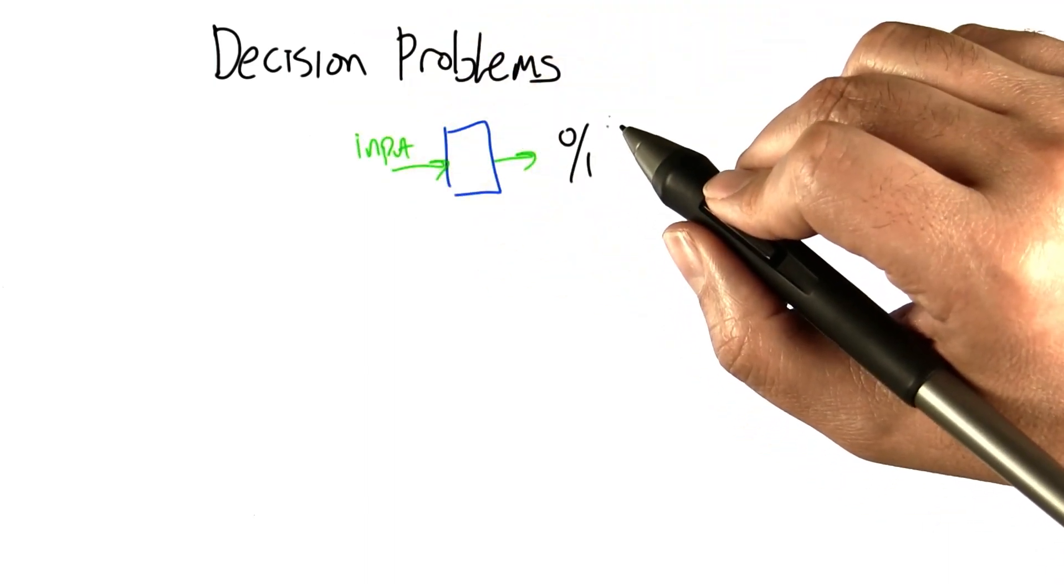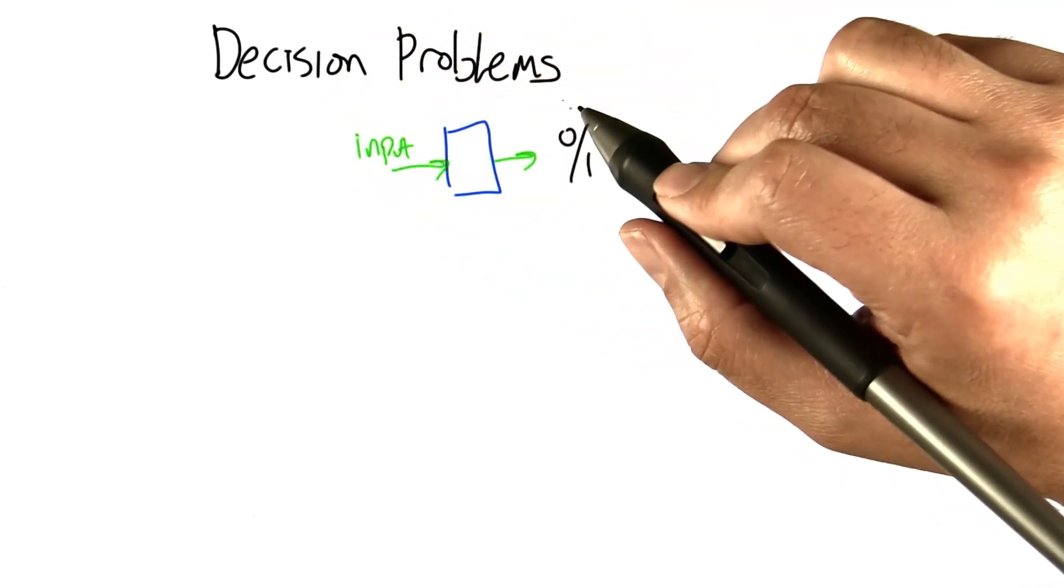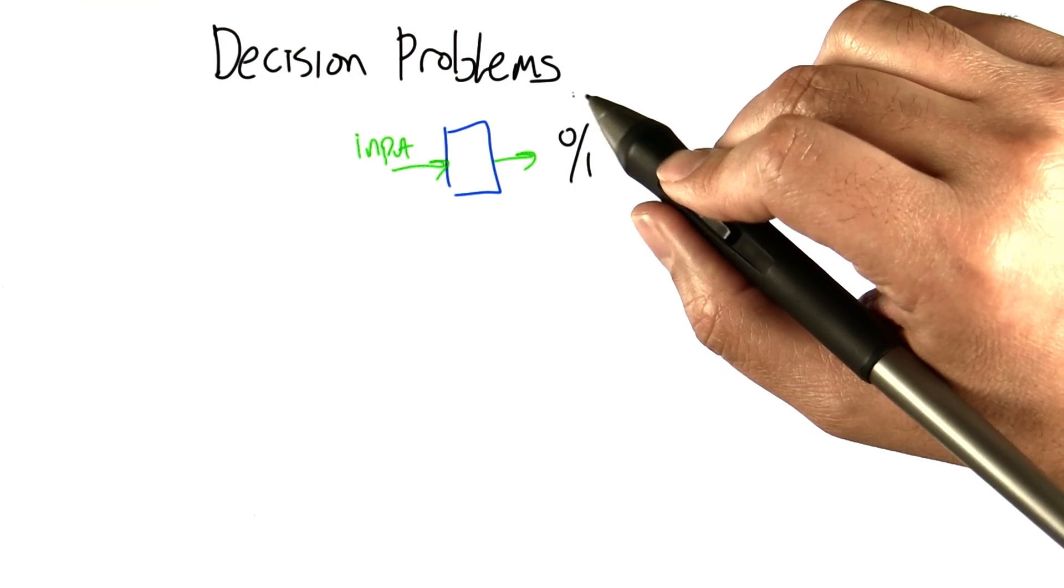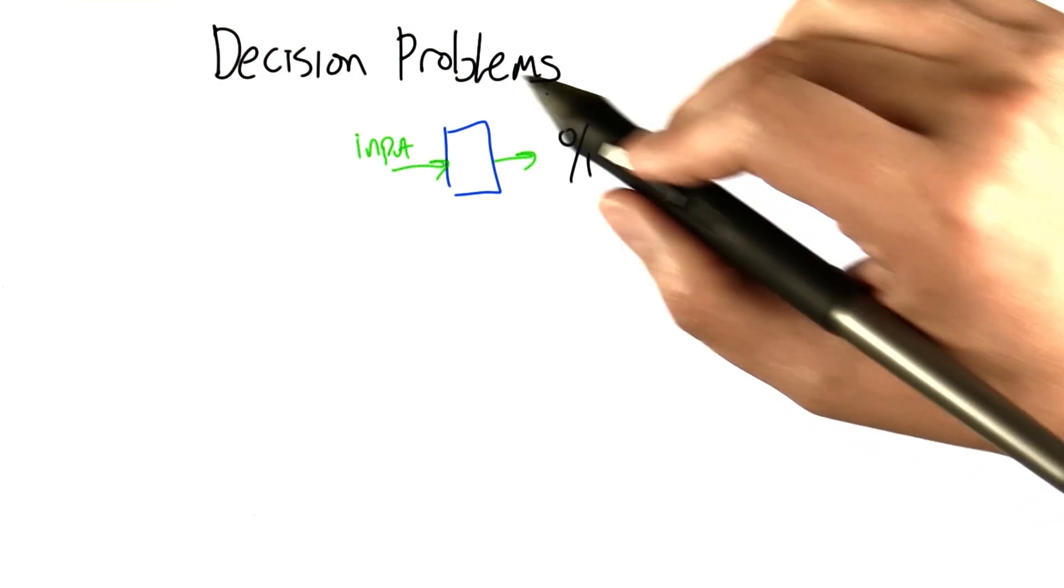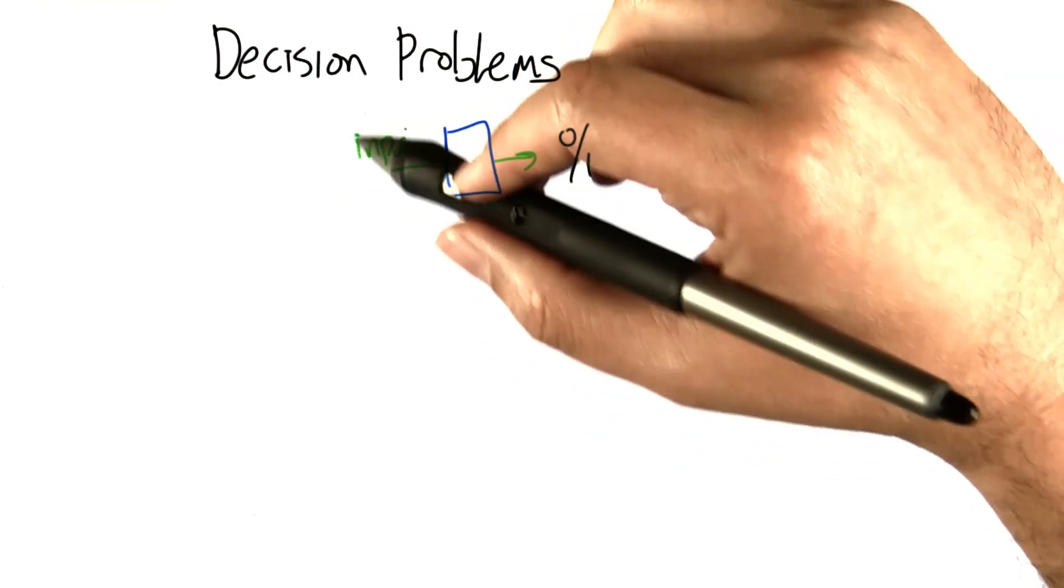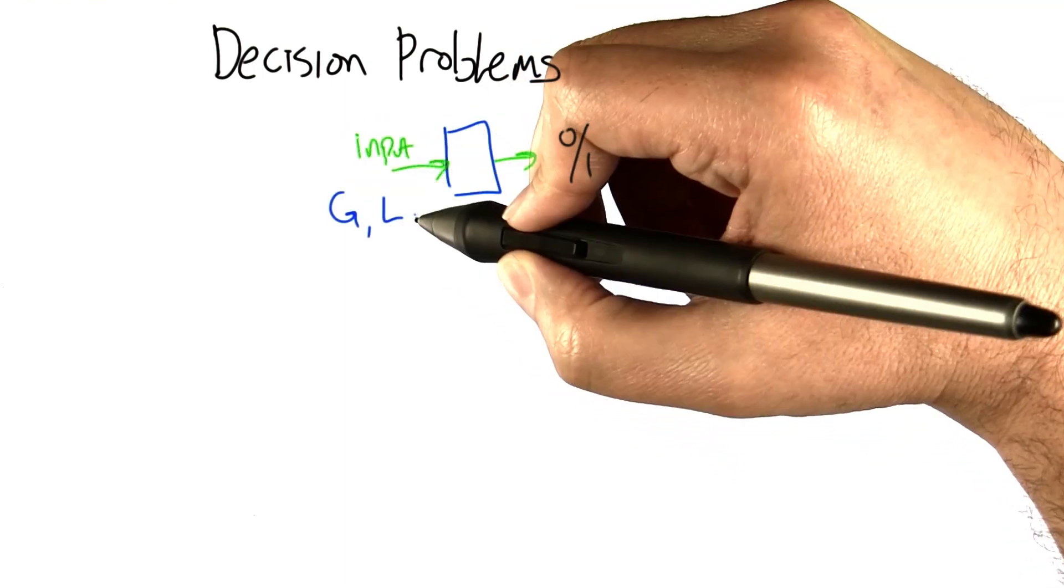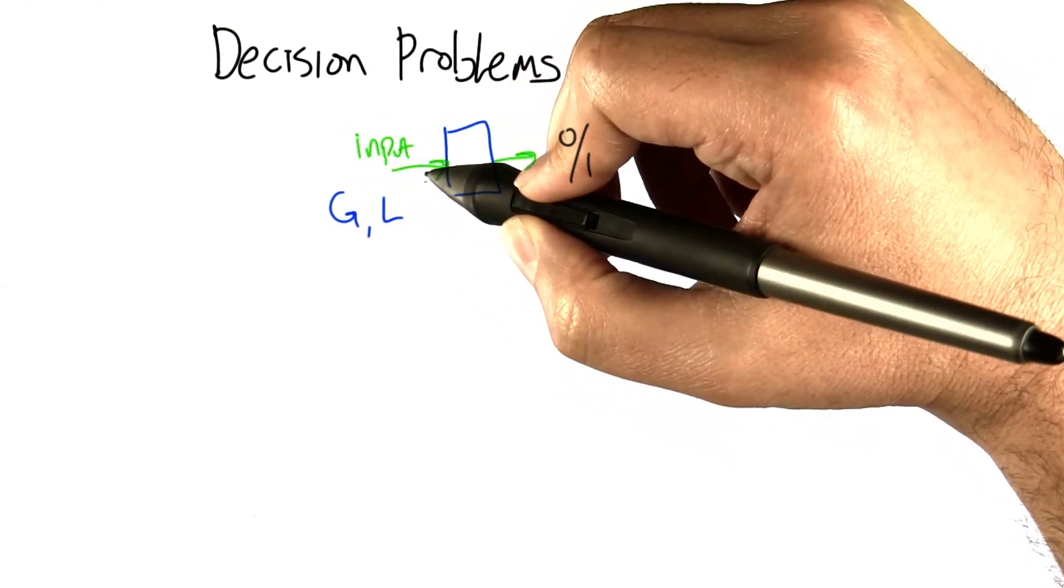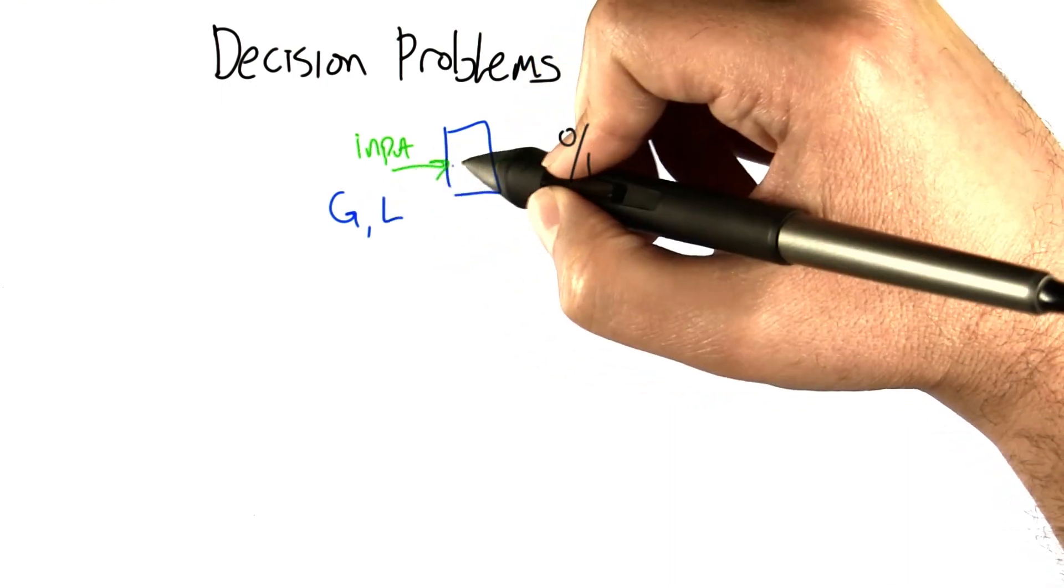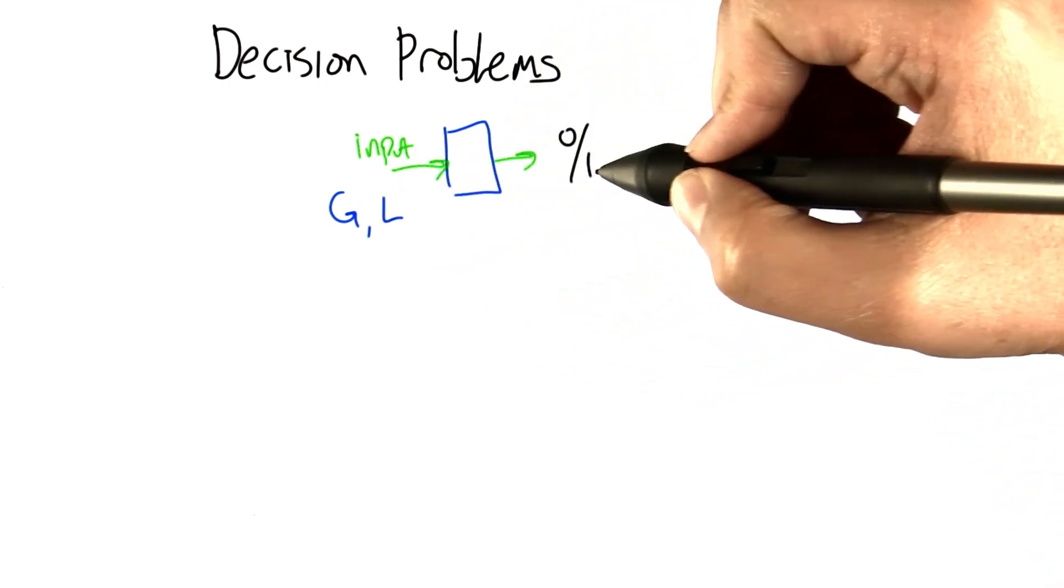To make some of the issues we're going to be talking about simpler, we're going to focus on very simple kinds of problems. Problems that take input just like we've been looking at, be it a graph or a list, whatever it happens to be, and processes that to get an answer and the answer is just 0 or 1, yes or no.